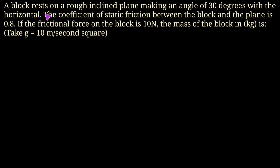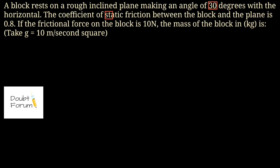Hello friends, welcome to Doubt Forum. This question is: a block rests on a rough inclined plane making an angle of 30 degrees with the horizontal. The coefficient of static friction between the block and the plane is 0.8. If the frictional force on the block is 10 Newton, the mass of the block in kilograms is — and the value of g we can take as 10 meters per second square.